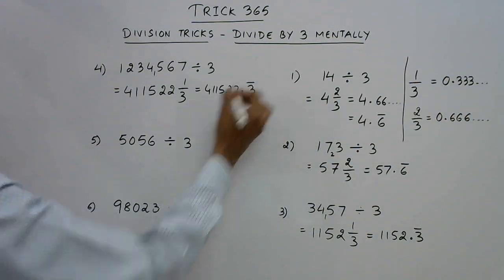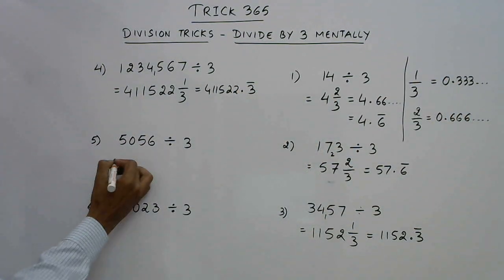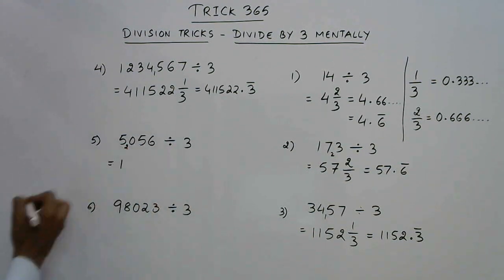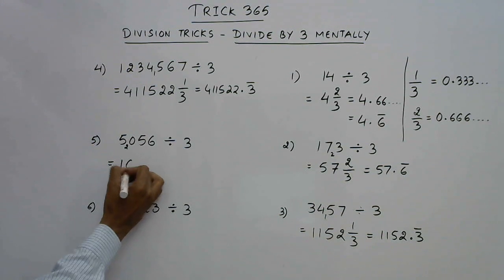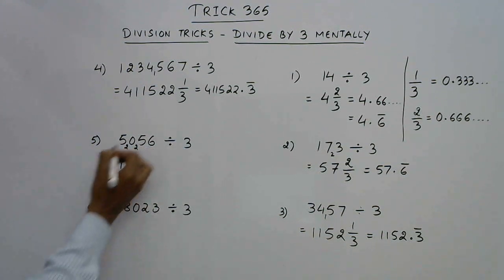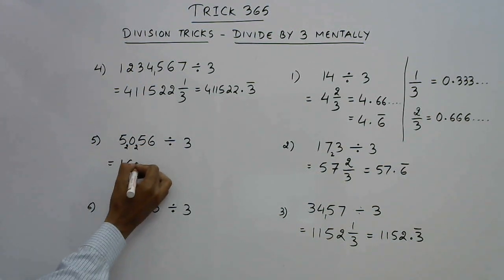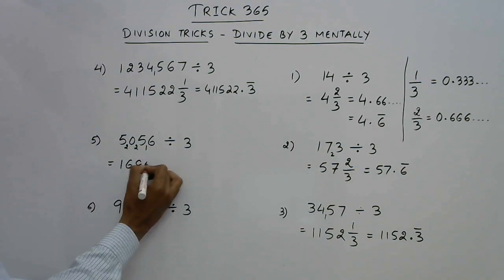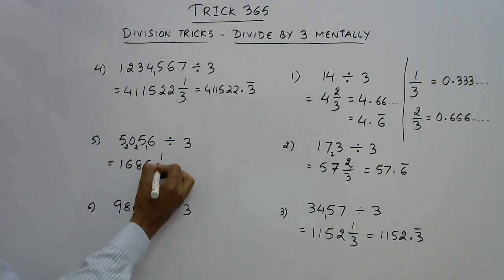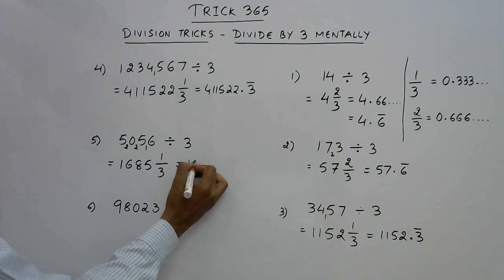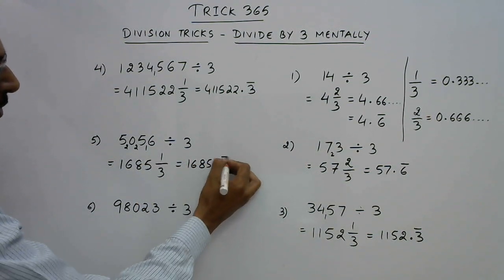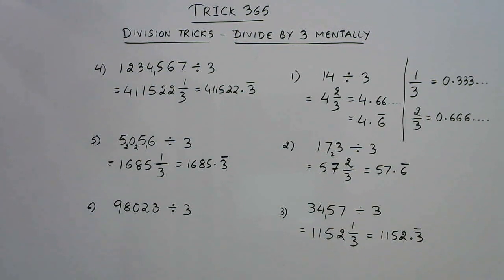In this case, three ones are three so you have a remainder of two. Twenty-three — three sixes are eighteen — again a remainder of two. Twenty-five — three eights are twenty-four — so you have a remainder of one. Three fives are fifteen, again a remainder of one. So the answer is 1685, and 1/3 means 3̄ after the decimal. So the answer is 1685.3̄.